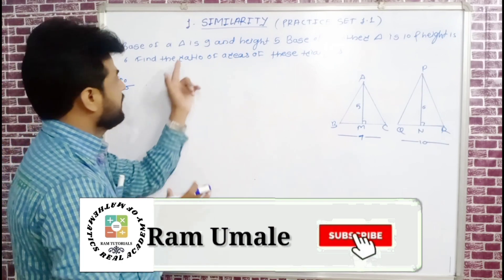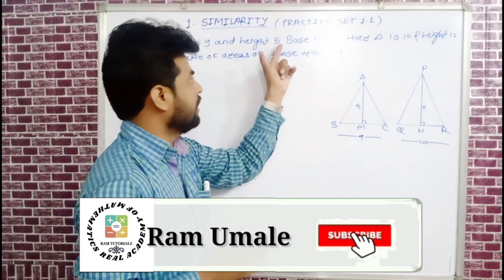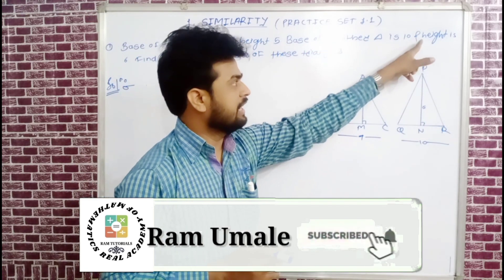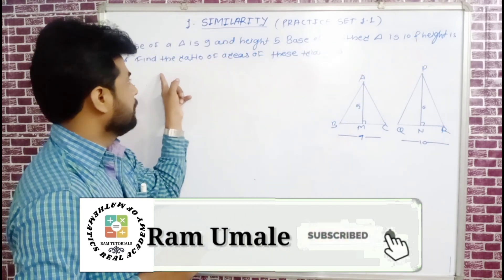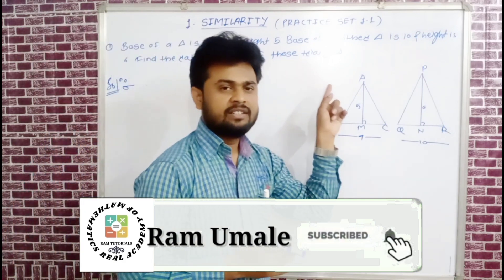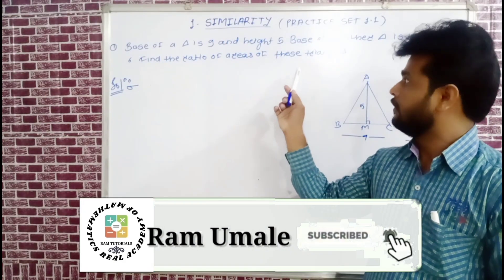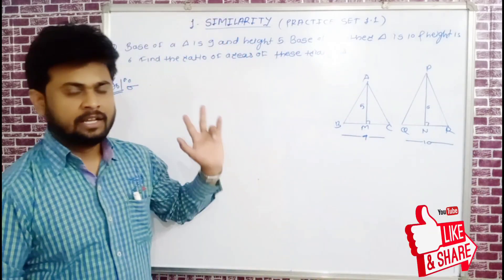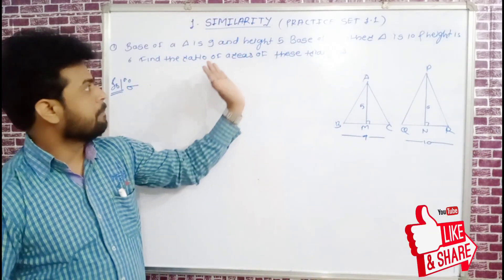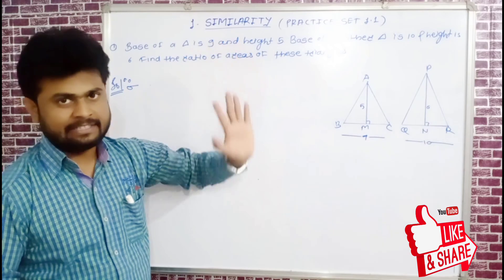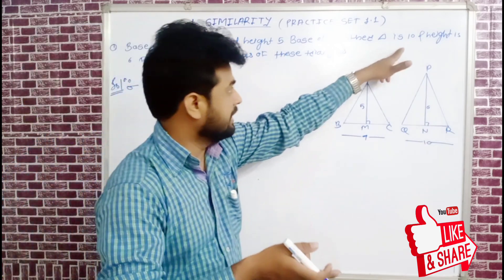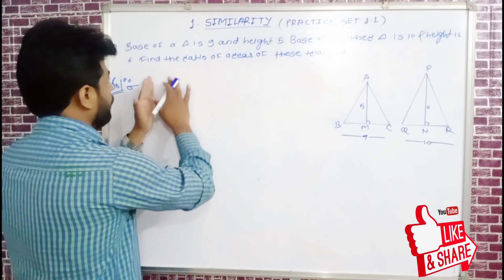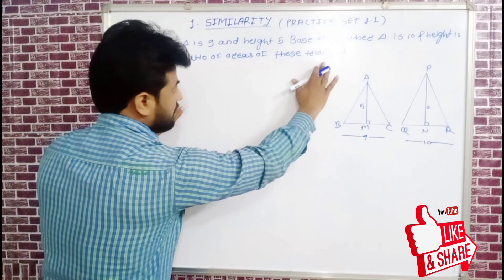The base of the first triangle is 9 and height is 5. The base of the second triangle is 10 and height is 6. Find the ratio of the areas of these two triangles.